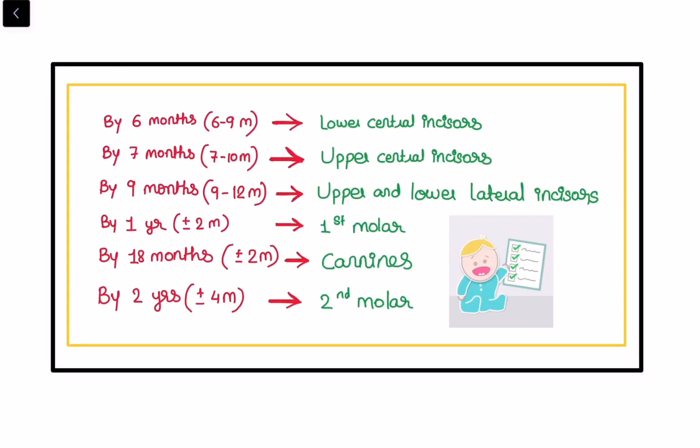To remember which teeth appear first and which appear last in primary dentition, you need to remember this table. By 6 months, on average 6 to 9 months, the first pair of teeth, the lower central incisors, appear in life. By 7 months, on average 7 to 10 months, the upper central incisors appear. By 9 months, 9 to 12 months, upper and lower lateral incisors appear in life. By 1 year the first molar appears. By 18 months the canines appear. And by 2 years the second molar appears.